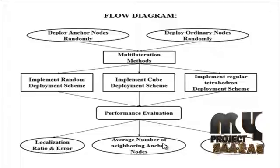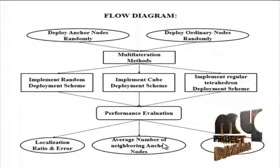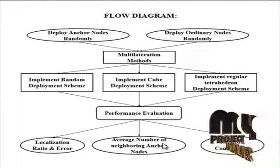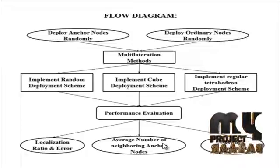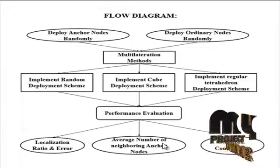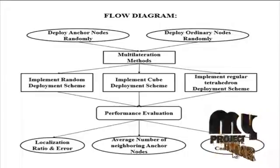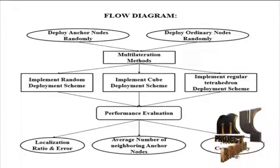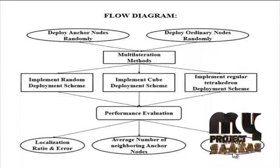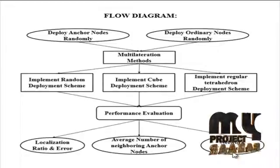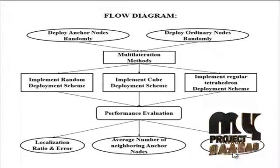The average number of neighboring anchor nodes is the ratio of the number of sensor nodes that can communicate with anchor nodes to the total number of sensor nodes. Network connectivity is the ratio of the number of sensor nodes that can communicate with other sensor nodes to the total number of sensor nodes. The performance of the regular tetrahedron deployment scheme is slightly better than that of the other two schemes.